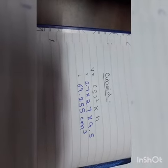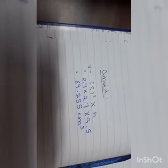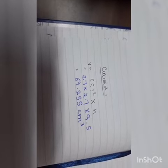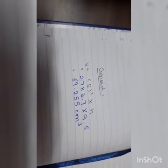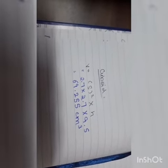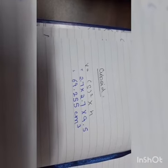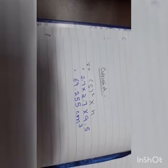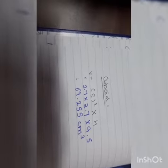Similarly, we find the volume of cuboid, which is side square into height. The side was 2.7. So, we will substitute the values and the volume will be 69.255 cm³.